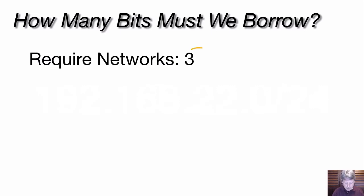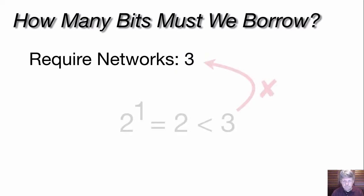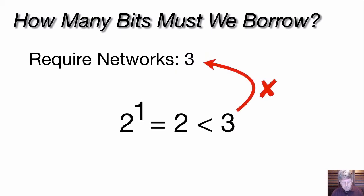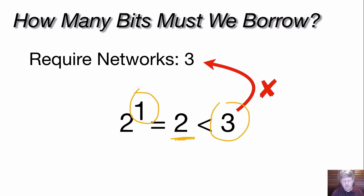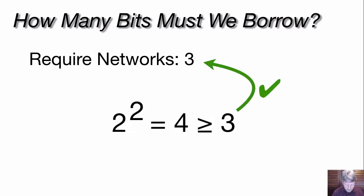We need three subnets, so we need to figure out what binary power gives us at least three. We start off using one bit: two raised to the power of one gives us two. Obviously that's not going to work — one bit can only have two possible values, zero and one, limiting us to two subnets. If we use two bits: two raised to the power of two gives us four, which is greater than or equal to the three that we need. Therefore, that's going to work for us.